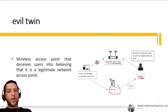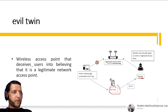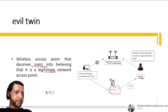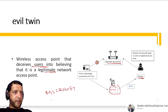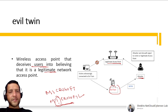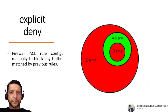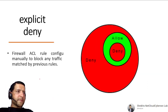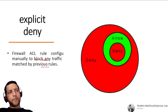Evil Twin is a wireless attack where an attacker sets up a rogue access point that appears legitimate — mimicking a real network name. For example, if the real network is 'Microsoft', the attacker creates a similar-looking SSID. Users unknowingly connect to the fake AP thinking it's legitimate. Explicit Deny is a firewall access rule configured to block any traffic not matched by previous allow rules — you explicitly allow certain traffic (Rick, Shake, Sam), then block everyone else.